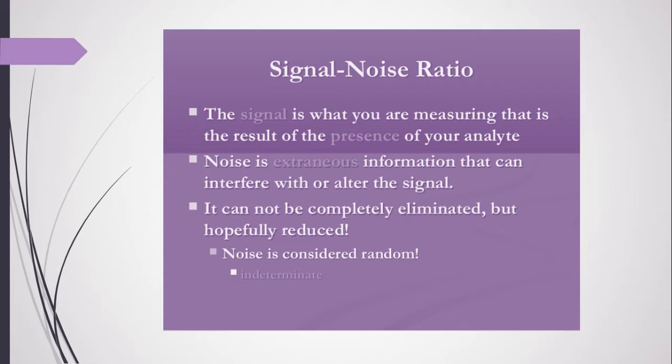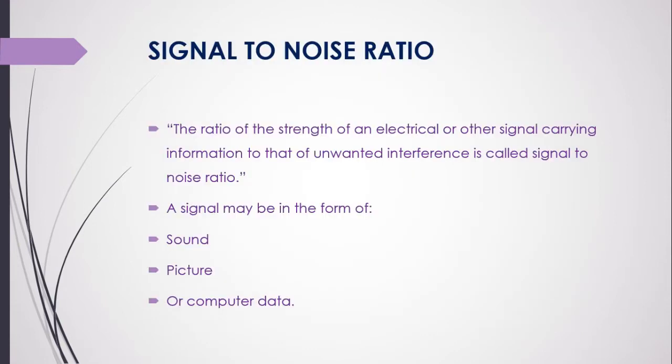Noise is considered as random and it cannot be completely eliminated, though it can be reduced. Now, moving on to the main definition: signal to noise ratio can be defined as the ratio of the strength of an electrical or other signal carrying information to that of unwanted interference. A signal may be in the form of sound, picture, or computer data.